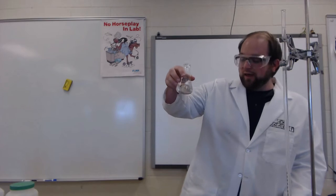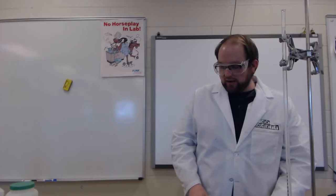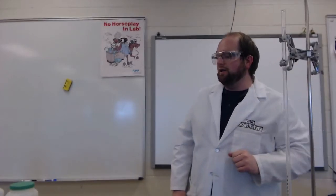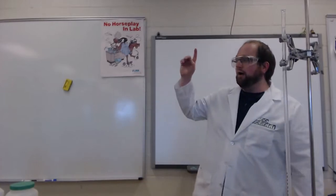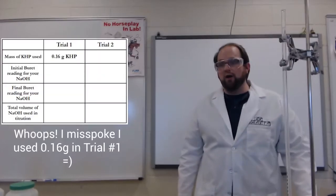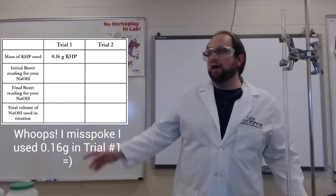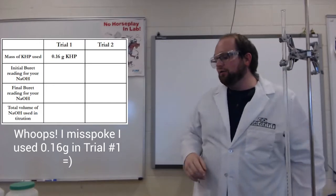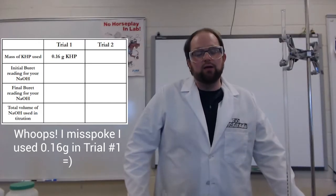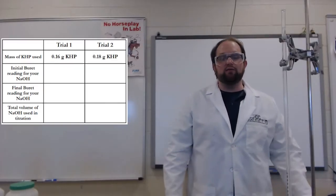I was able to take the chemical KHP and dissolve two samples of it into these two flasks. They don't look that exciting, but they have some phenolphthalein indicator that's going to react with our NaOH. Our first sample of KHP used 0.15 grams of the solid. In my second trial, I used 0.18 grams of the solid.